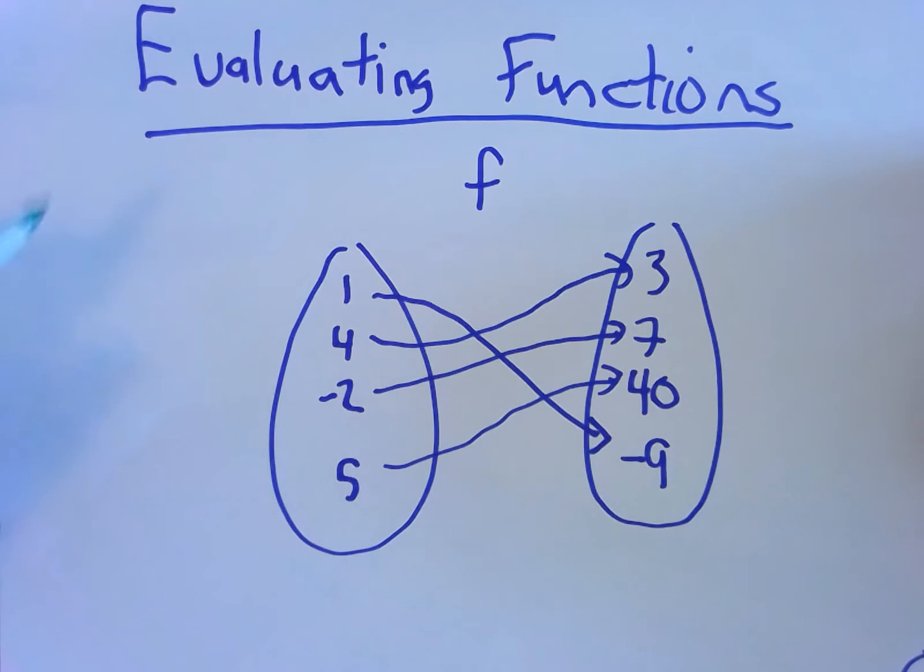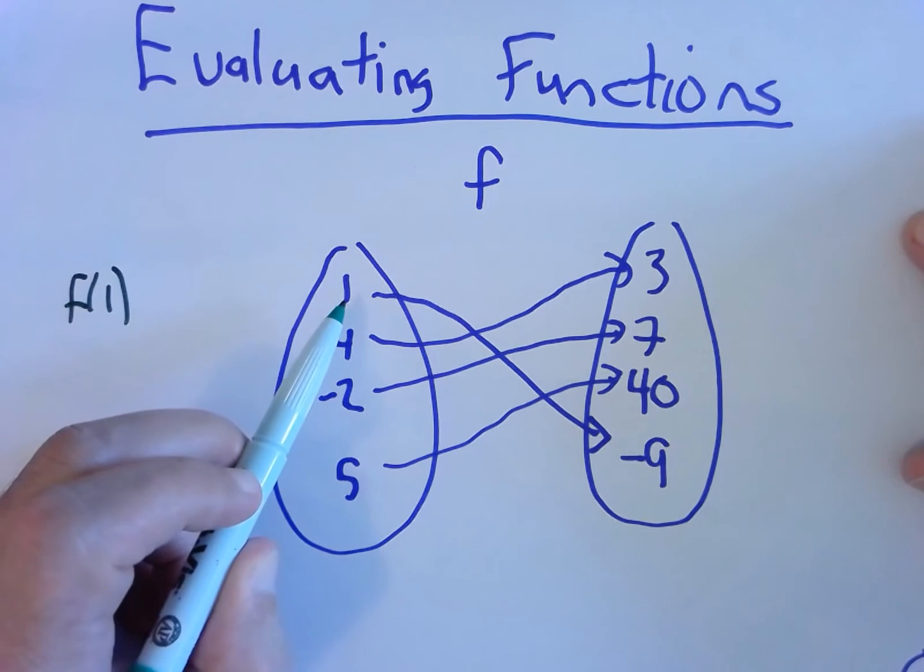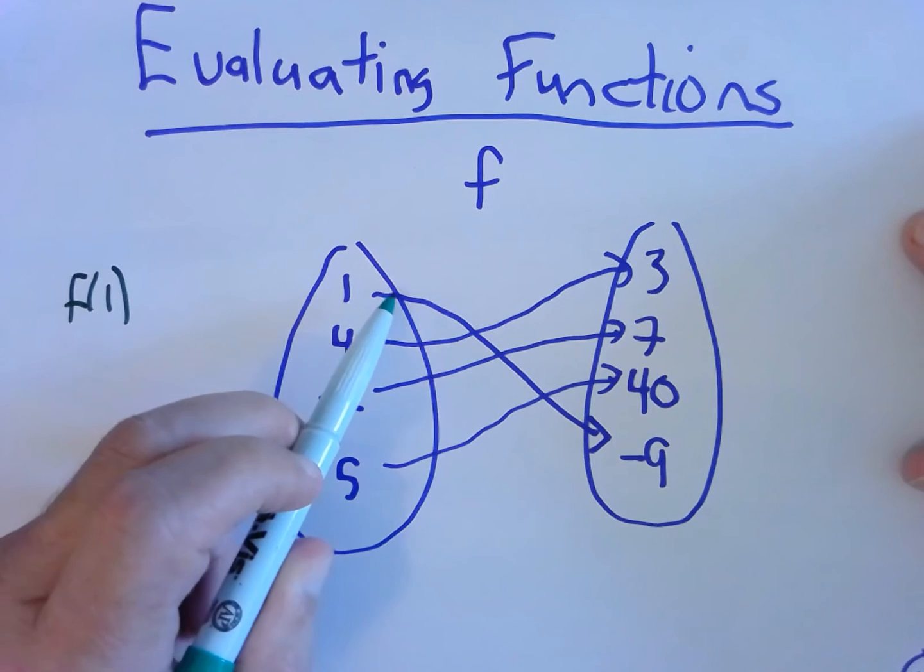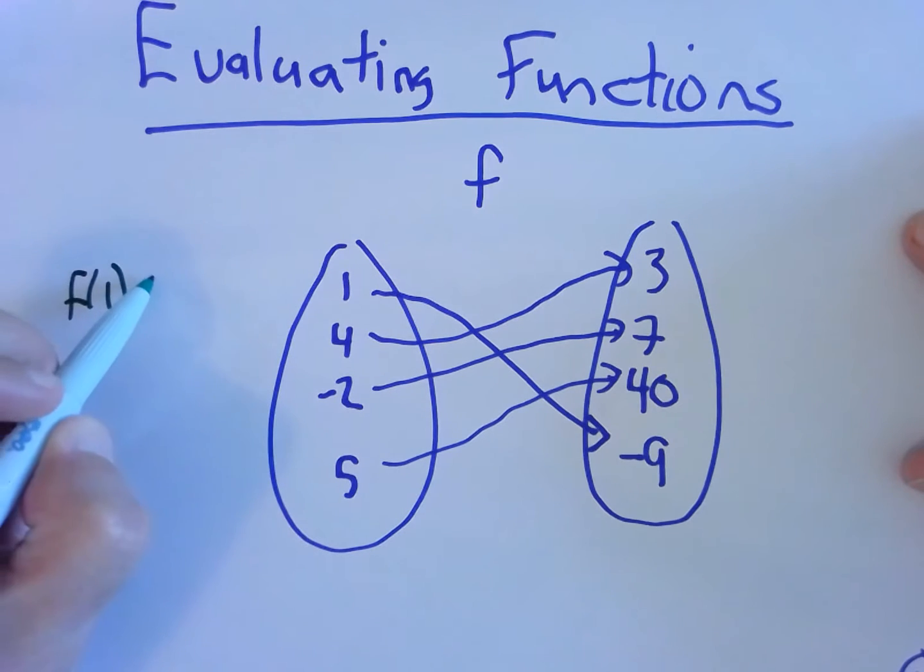If I were to ask a question like, what is f of 1, that means using the input 1, follow the line and see what the output is when the input is 1. So f of 1 would equal negative 9.